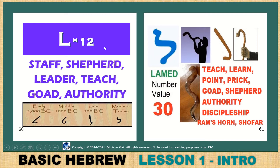El — Lamed, for staff, shepherd, leader, teach, goad, and authority. When he said 'you are coming against the pricks,' it was the pricks of the goad — the shepherd's staff is called a goad in Hebrew. Teaching, learning, pointing, prick, goad, shepherd, authority, discipleship. When he said to Saul, 'Why kick against the pricks of my goad?' — the shepherd's staff — it is pointless. You cannot kick against the Lord; he has the authority and discipleship. The value of 30. The shape looks like a ram's horn — like the shepherd's staff — power and authority.